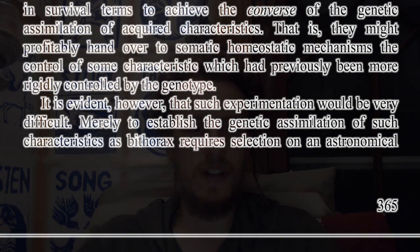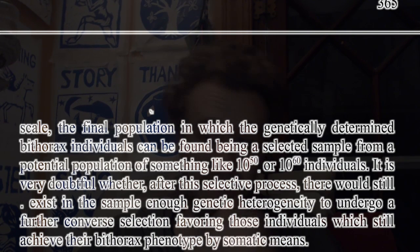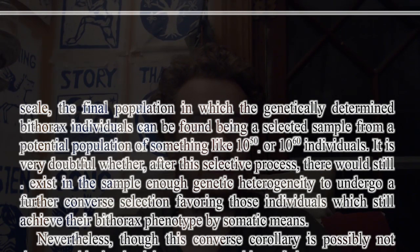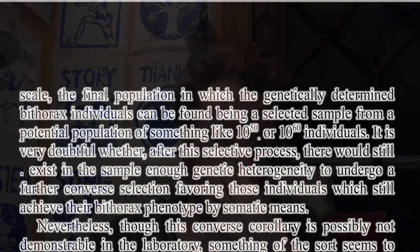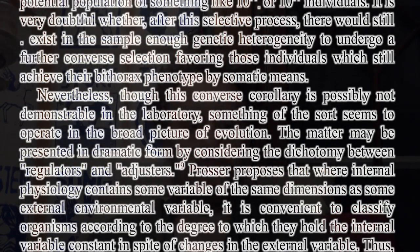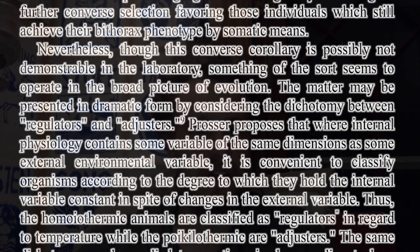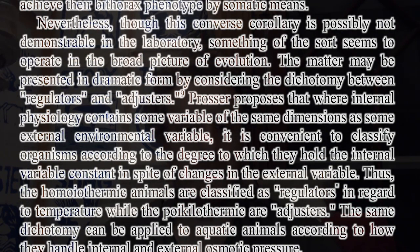Merely to establish the genetic assimilation of such characteristics as bithorax requires selection on an astronomical scale, the final population in which the genetically determined bithorax individuals can be found being a selected sample from a potential population of something like 10 to the 50th or 10 to the 60th individuals. It is very doubtful whether, after this selective process, there would still exist in the sample enough genetic heterogeneity to undergo a further converse selection favoring those individuals which still achieve their bithorax phenotype by somatic means. Nevertheless, though this converse corollary is possibly not demonstrable in the laboratory, something of the sort seems to operate in the broad picture of evolution. The matter may be presented in dramatic form by considering the dichotomy between regulators and adjusters.